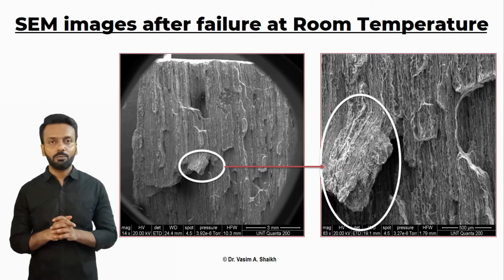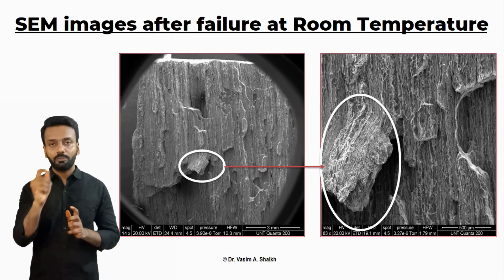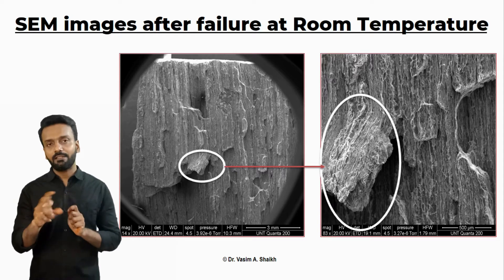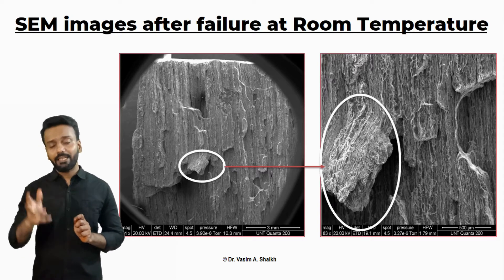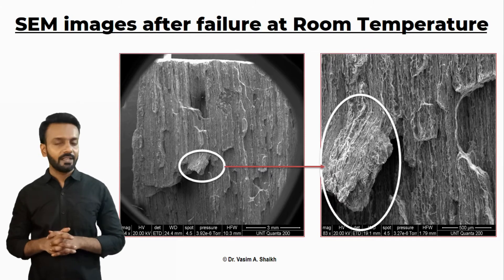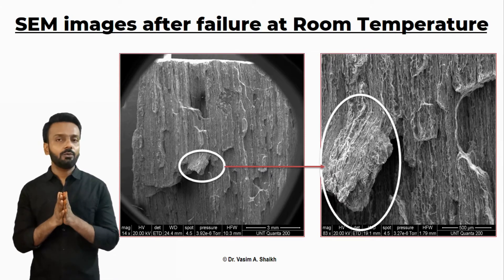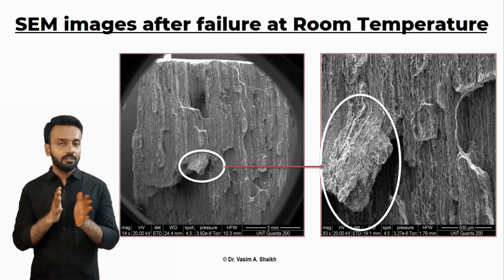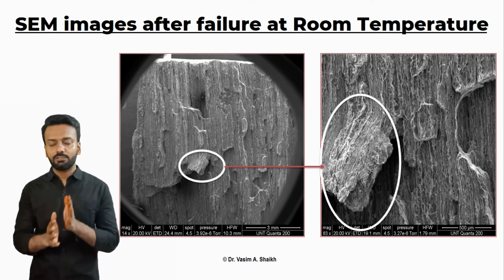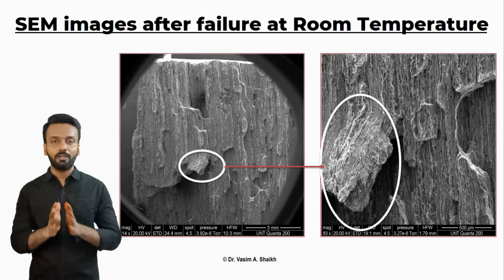There is some plastic deformation. The circle shown here basically indicates that the material has been plastically deformed at that place. The second image shows the same thing magnified at a very high magnification rate, and we can relate that at room temperature the material fails because of some deformation — the material is still in a ductile state at room temperature.